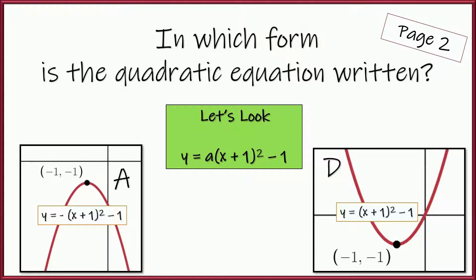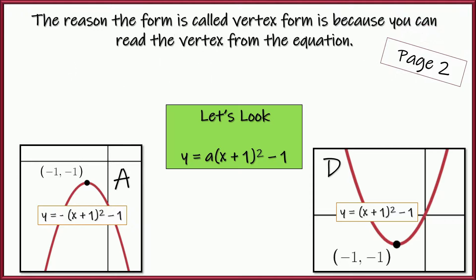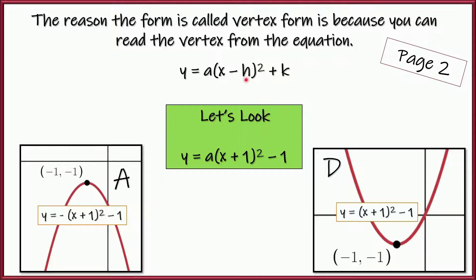The reason it's called vertex form — and we're on page 2 if you're following along with the notes — is because you can actually just read the coordinate of the vertex right from the equation. Right from the form y equals A times x minus h squared plus k, you can read the vertex. It's h comma k. A shows you the direction.